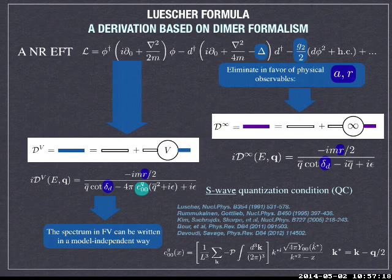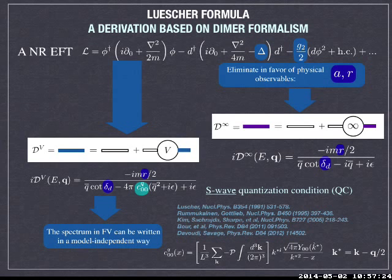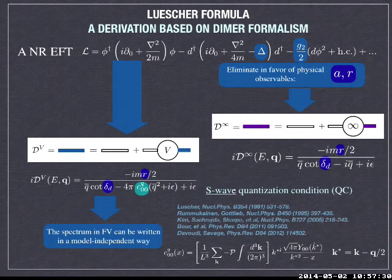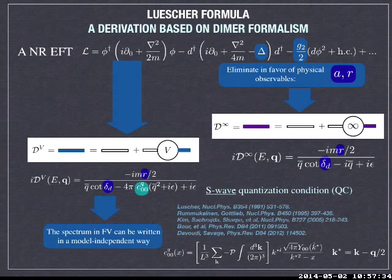You get a relation between G₂ and δ in terms of a and R. Now let's go back to the finite volume physics. In a finite volume, you can write down the full dimer propagator with the same set of diagrams. The only difference is that when you have these loops, instead of integrating over all momenta — as in infinite volume physics — you have periodic boundary conditions and discretized momenta, so instead of an integral you have a sum. If you're able to do those sums, you can write down your finite volume propagator.